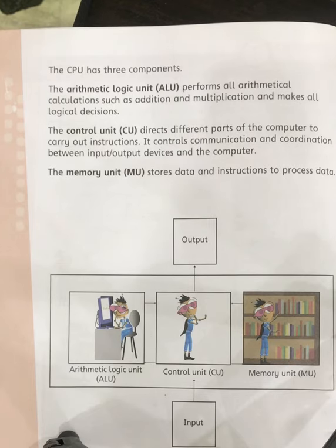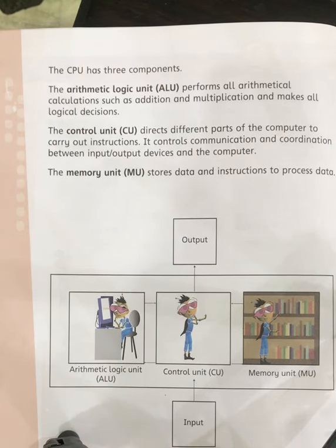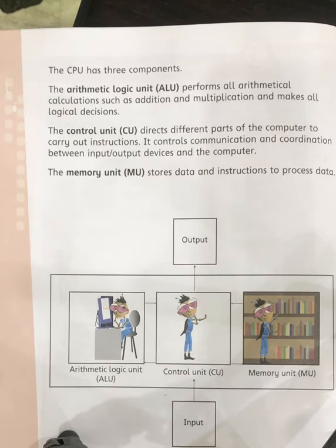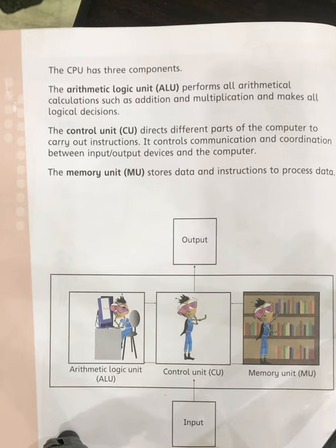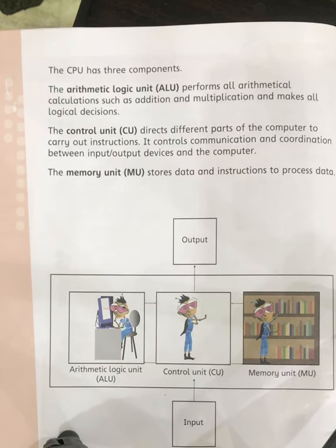This is page 20 in your book, and it tells us the three most important components of the CPU. Number one: ALU — Arithmetic Logical Unit. Number two: CU — Control Unit. Number three: MU — Memory Unit. First, let's take the Arithmetic Logical Unit. As the name indicates, arithmetic is another name for mathematics, so this part of the CPU deals with all arithmetic calculations — addition, subtraction, multiplication, division, percentage, and exponents.